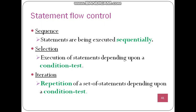Before getting into the selection statements, we need to know how the flow of control happens. The flow of control can be of three types: one - sequential, second - selection, and third - iteration or looping. Sequential means statements are executed one after another. Selection means based on a condition, a certain set of statements will be executed depending on whether the condition is true or false. Iteration means a certain set of statements is repeated multiple times depending on the condition.